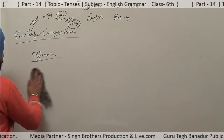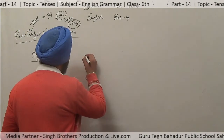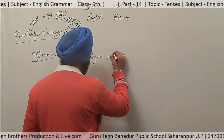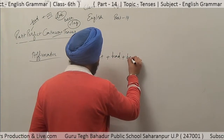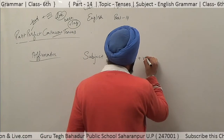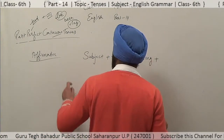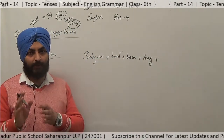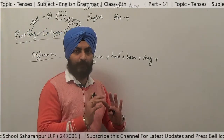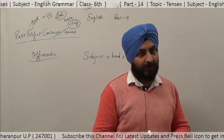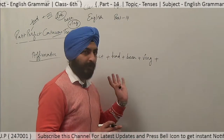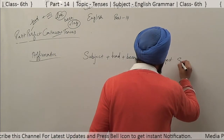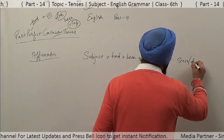So the proper formation will be: subject — whether it is singular or plural — you have to use 'had' plus the third form of 'be,' which is 'been,' plus verb plus -ing. We have studied earlier in the present perfect tenses to use 'since' or 'for.' For a certain point in time, we use 'since'; for an uncertain period of time, we use 'for.' After the object, we have to use 'since' or 'for.'